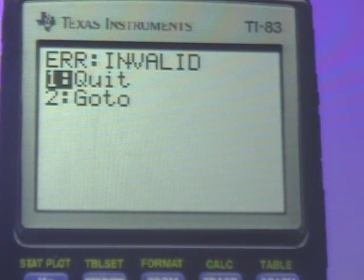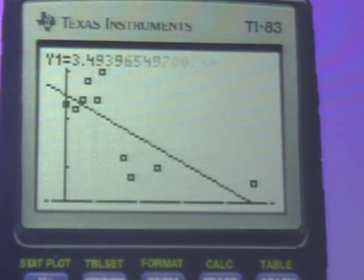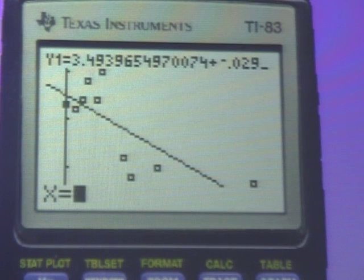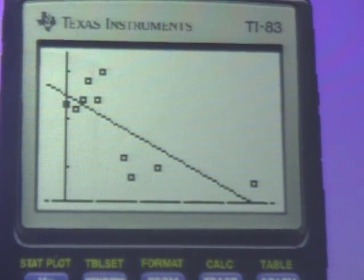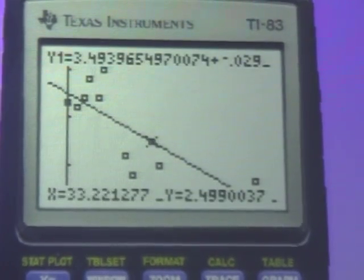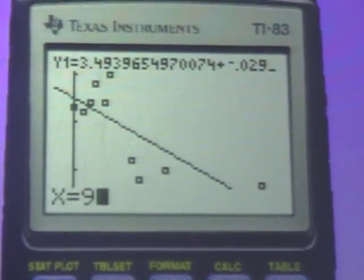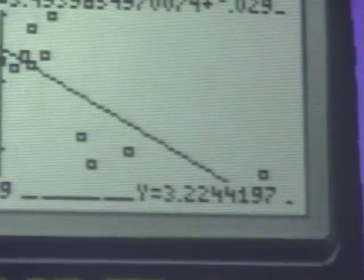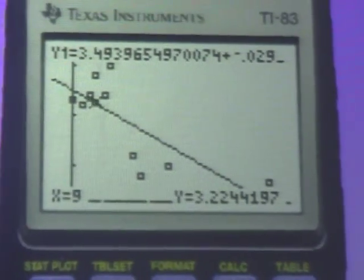So let's go to... I can't do 99. Clear. But I can do nine. And predict... Let me see. Trace. Down. Nine days absent. Enter. I have about 3.2 GPA. Alright. Hopefully that made sense. Bye.